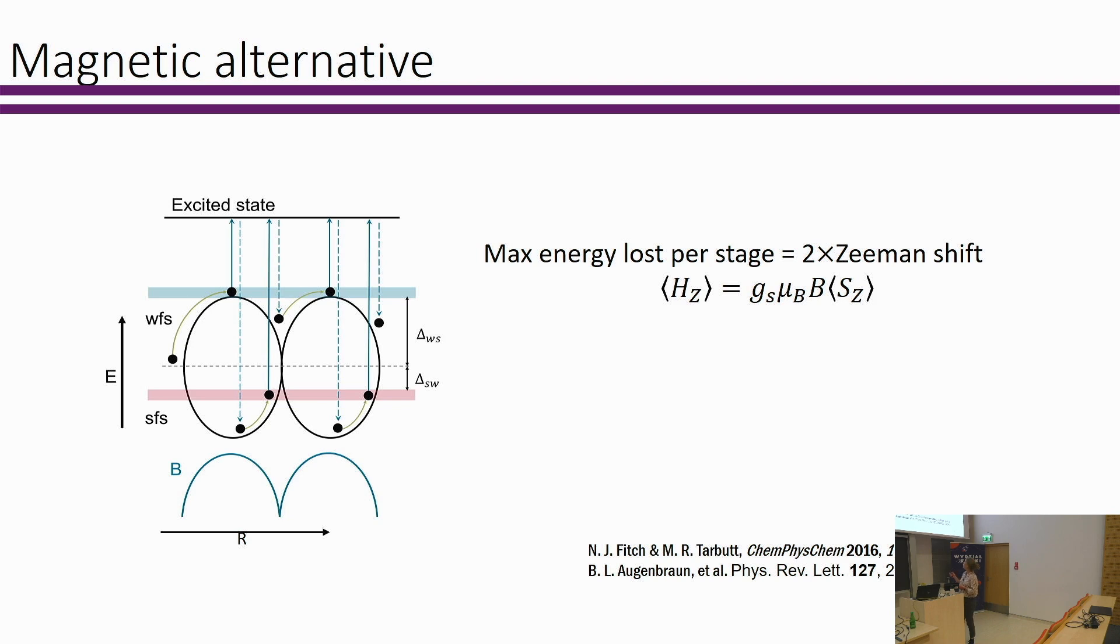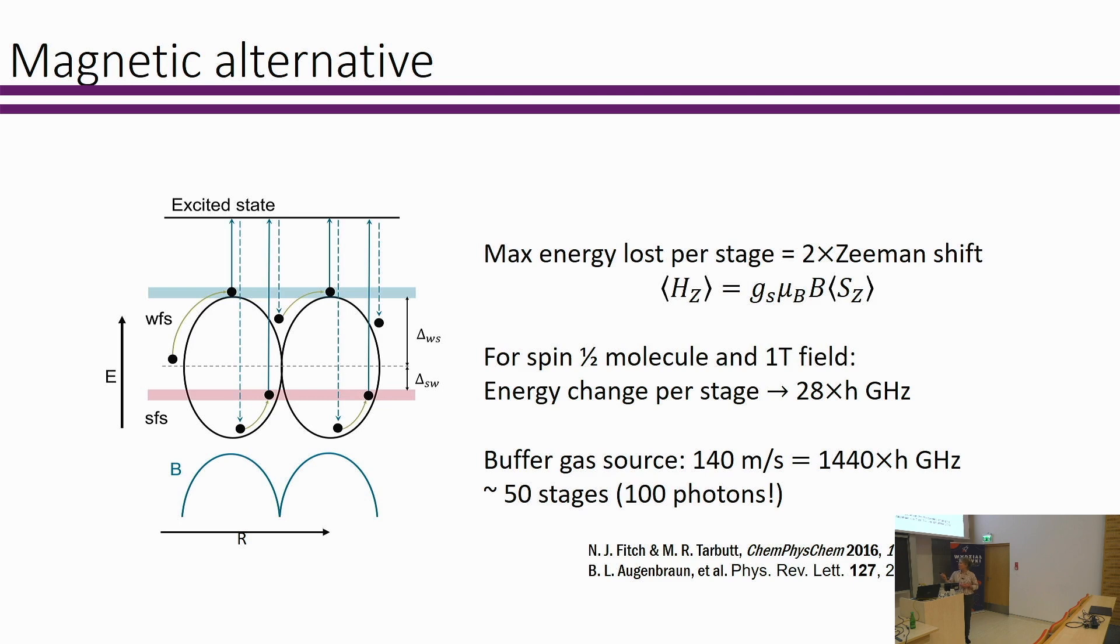The maximum energy that you can lose per stage is basically twice your total Zeeman shift that you can impart. This depends on the magnetic moment of the state and magnetic field. If we think about a spin-half molecule where we create a field of about a Tesla, then we get an energy change per stage of about 28 gigahertz. If we compare this back to our buffer gas source traveling at 140 meters per second, this corresponds to about 1400 gigahertz of energy. So we should be able to remove all of this velocity with just 50 stages, which corresponds to only 100 photon scatters.